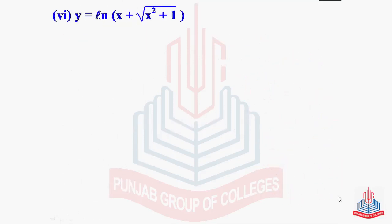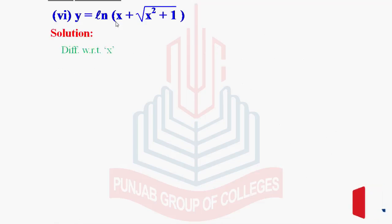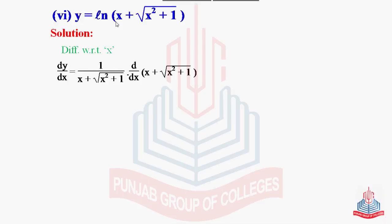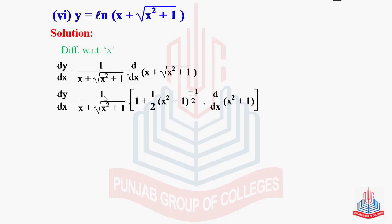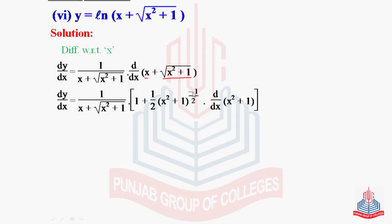Part 6: y = log(x + √(x² + 1)). Differentiate with respect to x. dy/dx becomes, using the formula for d/dx[log f(x)] = 1/f(x) · f'(x): 1/(x + √(x² + 1)) times the derivative of (x + √(x² + 1)). The derivative of x is 1, and the derivative of √(x² + 1) is (1/2)(x² + 1)^(-1/2) times the derivative of (x² + 1).